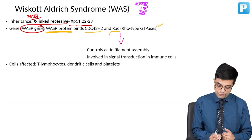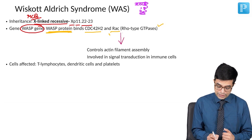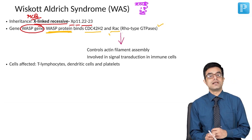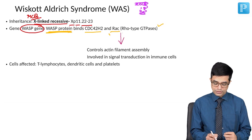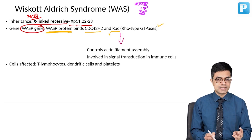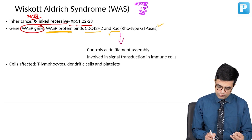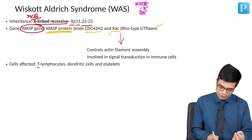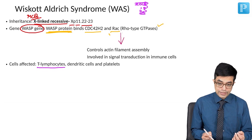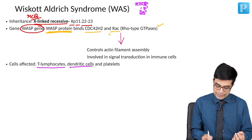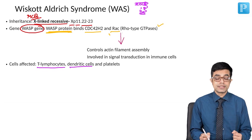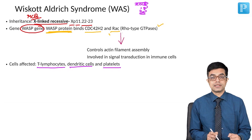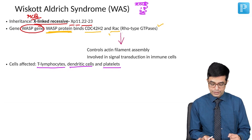The cells affected in Wiscott-Aldrich syndrome are not only immune cells but also blood cells like platelets. Three lines of cells are predominantly affected: T lymphocytes, dendritic cells (a kind of antigen-presenting cell), and platelets.